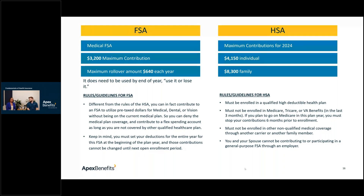What happens when you retire? With the HSA, you can take funds out at age 65 with no penalty, though you will be taxed according to your income tax bracket at that time. If you pull funds out earlier, there's a penalty plus taxes. These guidelines are on the IRS website.